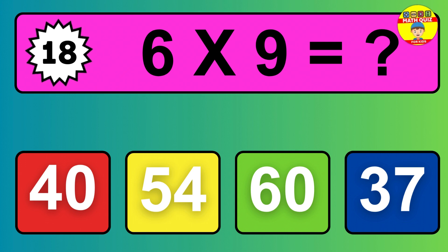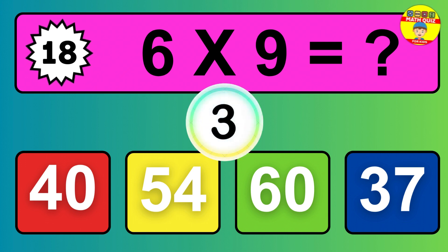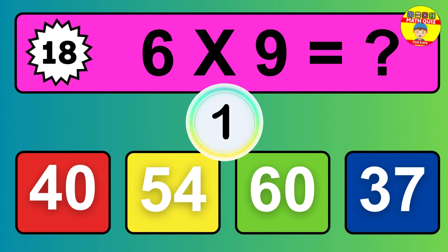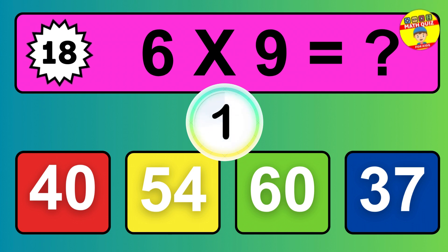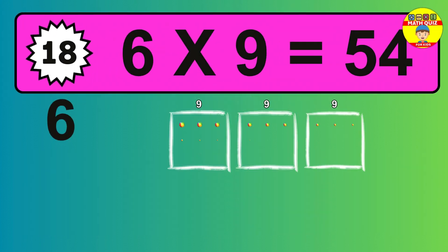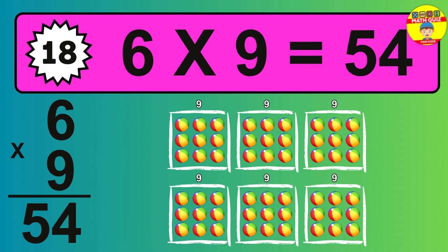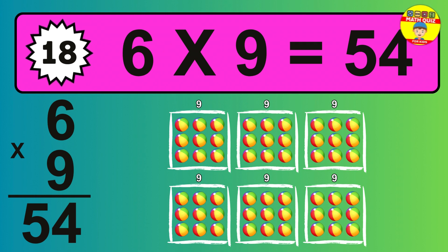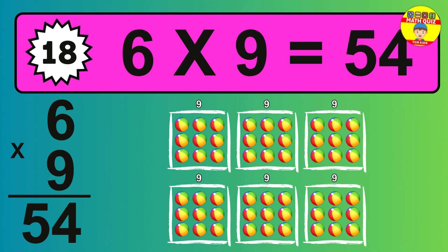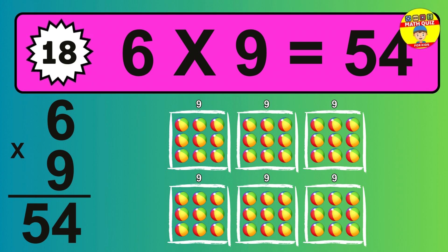Question 18. 6 times 9 equals what? The answer is 6 times 9 is 54. To calculate, we have 6 groups with 9 balls each one. So how many balls do we have? 54 balls.